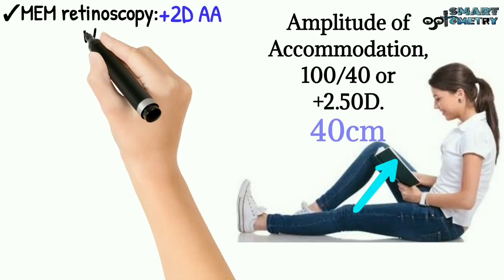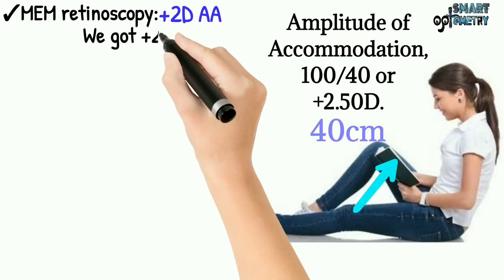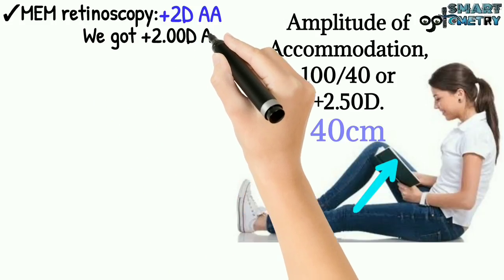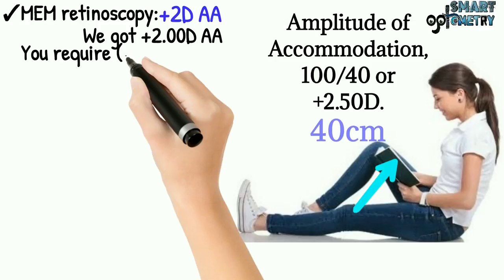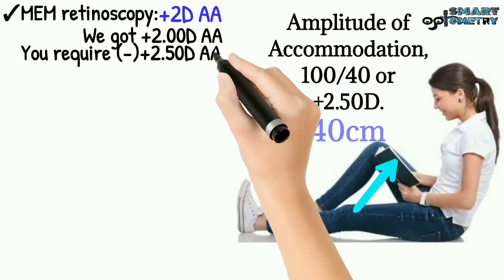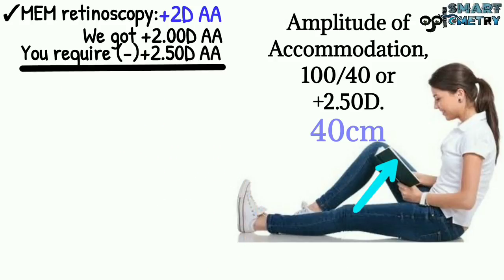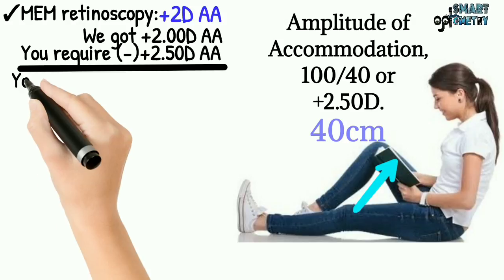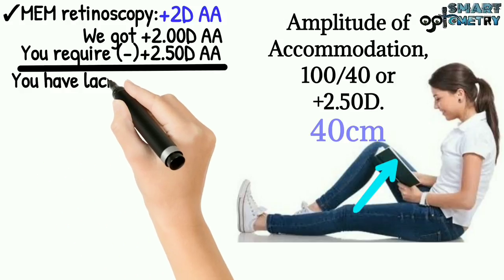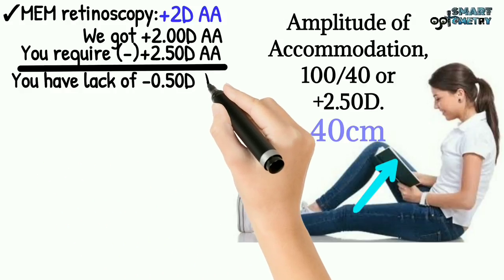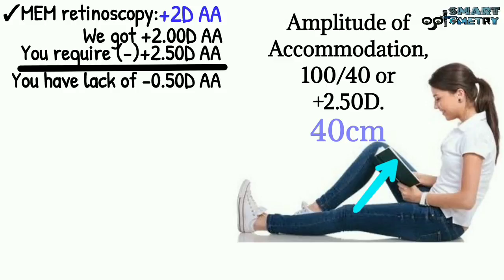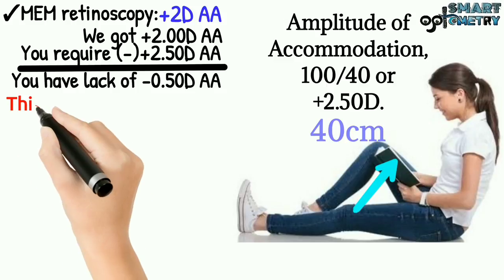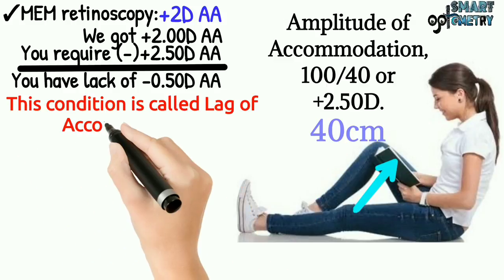We measured plus 2 diopters amplitude of accommodation, but you required plus 2.5 diopters to see the book clearly at 40 cm. So you have a lag of 0.50 diopters amplitude of accommodation. This condition is called lag of accommodation.